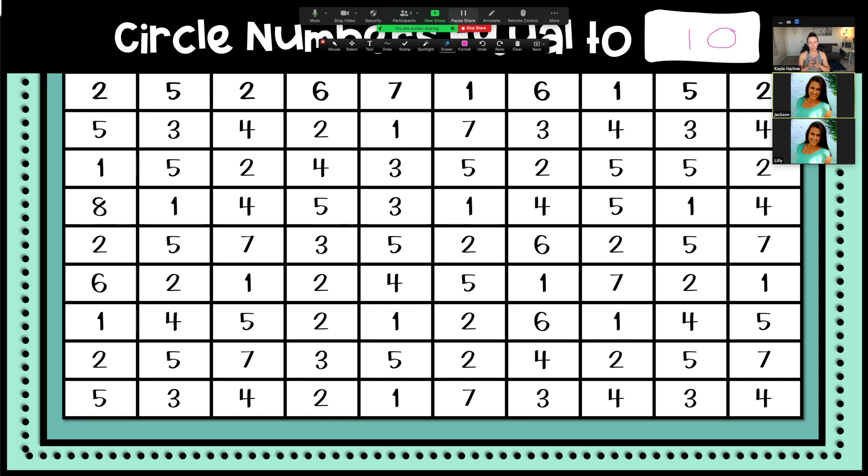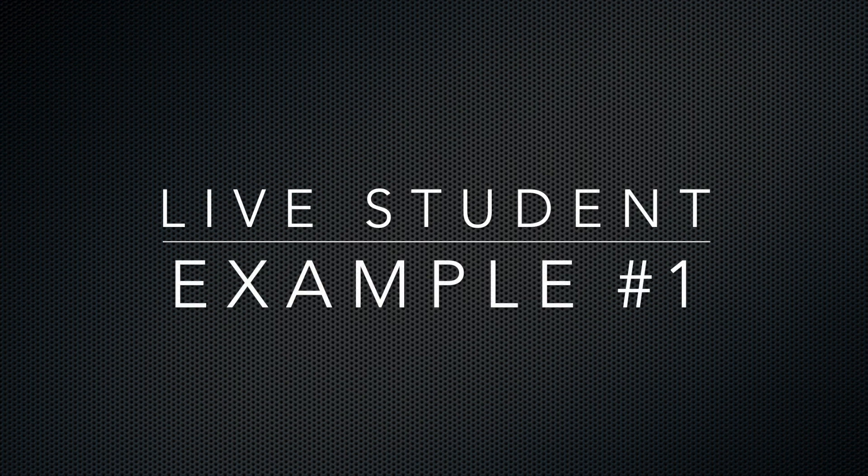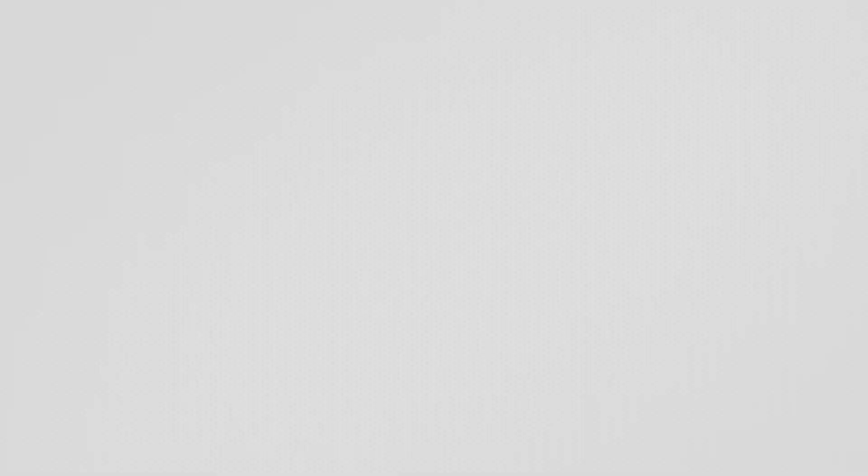All right, this is a great formative assessment for me to see how well they know their partners. We explain it's not a race but a race for correctness, and I'm going to show you a live example of what my students did today in my classroom with this activity. The next one: circle partners that equal to the number 10.